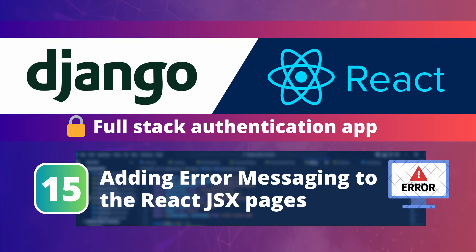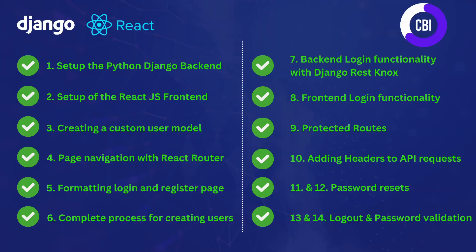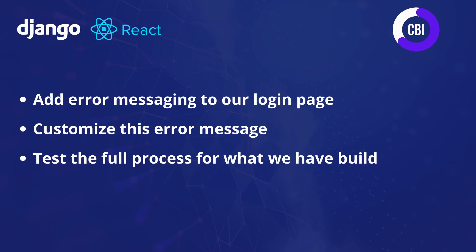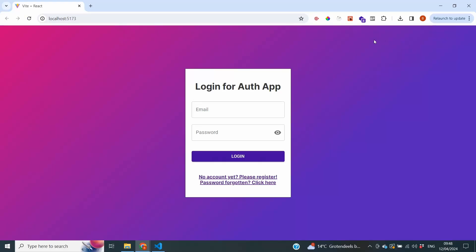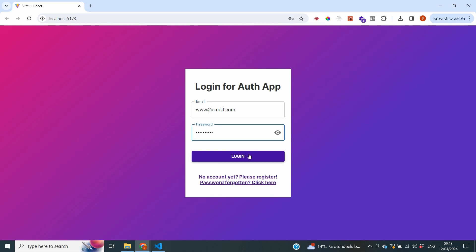Hi everyone and welcome to a new video on the CBI channel. In this tutorial series we're creating a Django and React login authentication system. This is not the first video — we've already done 14 before, covering topics from sign up to login to password resets. In this final video we're going to make some small tweaks to error messaging so users know exactly what is happening. If I try to log in with an email and password that are not in my database and click login, we don't actually get any error messaging.